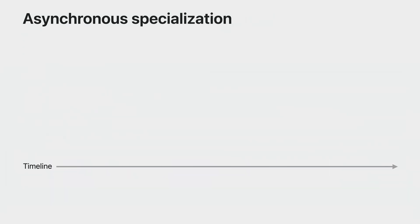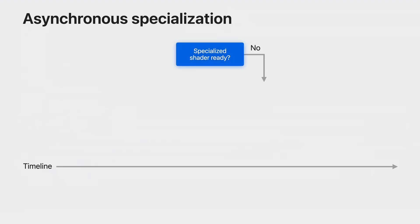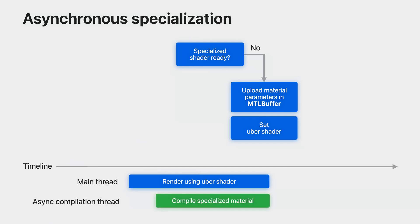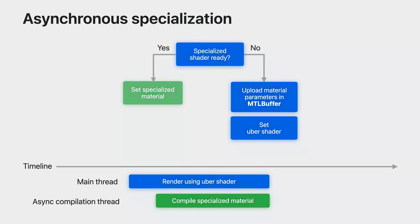This is a diagram of an asynchronous material workflow. By default, when the material has not yet been specialized, you use your uber shader. At the same time, Metal compiles the specialized shader in the background. Once this is done, you can switch out the uber shader for the fast specialized material.